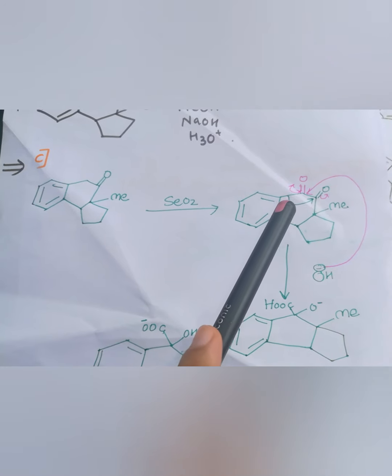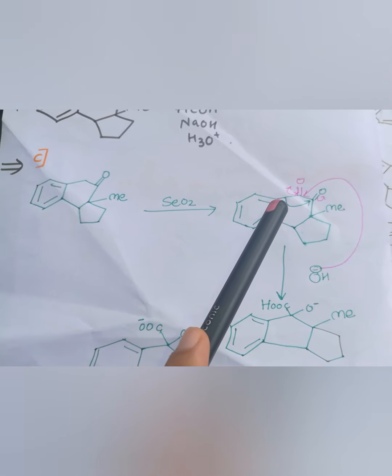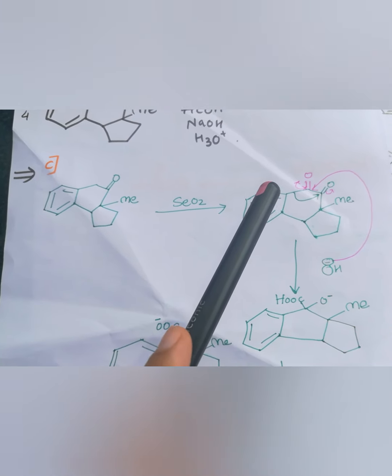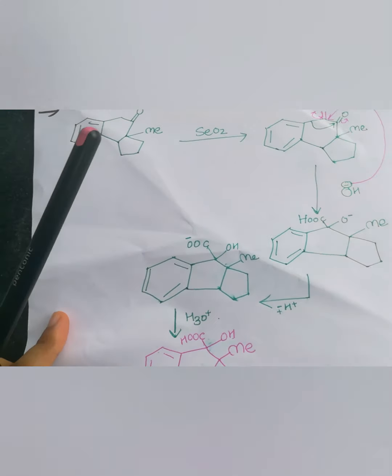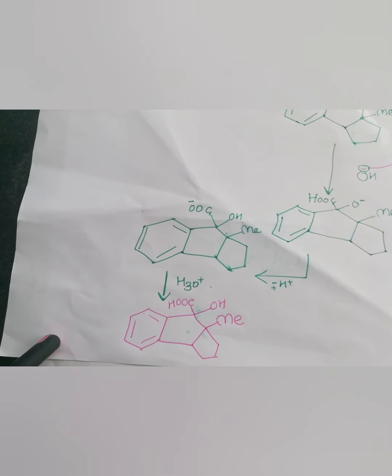There is a rearrangement that occurs in it, which is known to be as benzylic rearrangement. Therefore, it leads to ring contraction from 6 membered to a 5 membered ring. In presence of H plus, we get OH over here and COO minus. Again, on hydrolysis, we get the product which is C in the option.